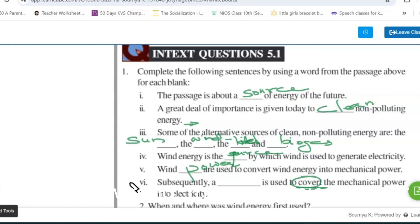Subsequently, a blank is used to convert the mechanical power into electricity. Use a generator, so using a generator the conversion takes place.